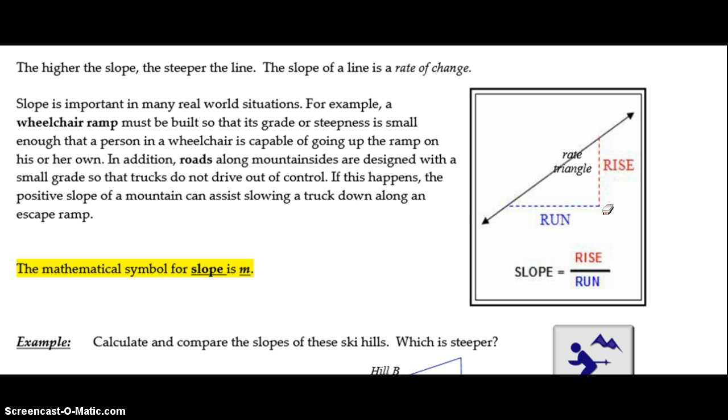As you can see in this diagram, the slope of a line is measured by the vertical rise over the horizontal run, and we can use the formula rise over run. The mathematical symbol used for slope is m.